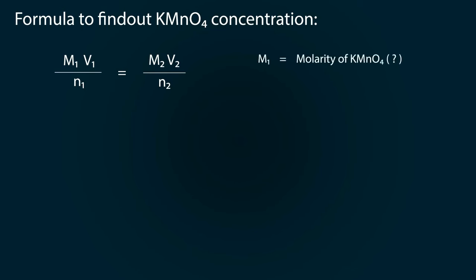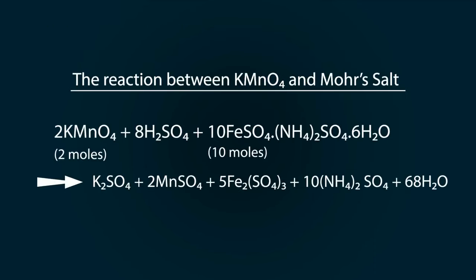Where M1 is the molarity of KMnO4, which is unknown. V1 is the volume of KMnO4, which is 4 milliliters. n1 is the number of moles of KMnO4, which is 2 moles, found from the reaction.